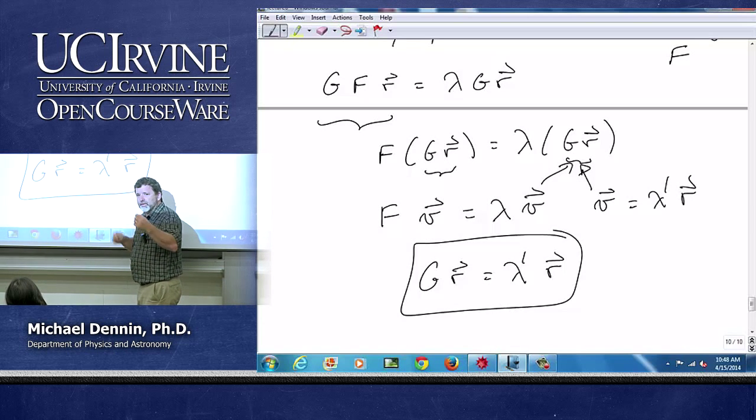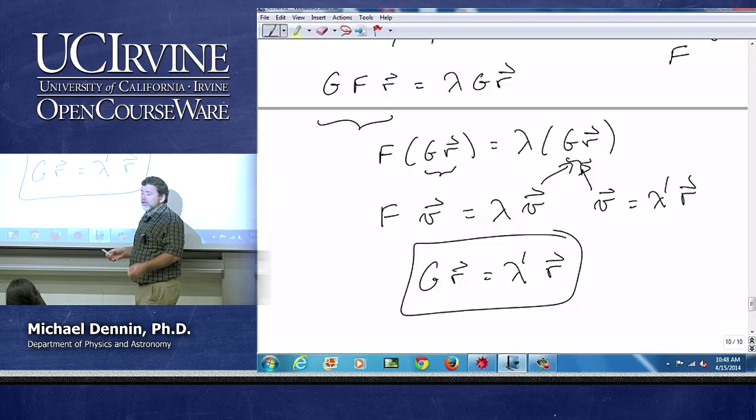So the eigenvalues of f and g aren't the same when they commute but the eigenvectors are the same. And that is at the core of so much what we do in quantum mechanics. It turns out to be